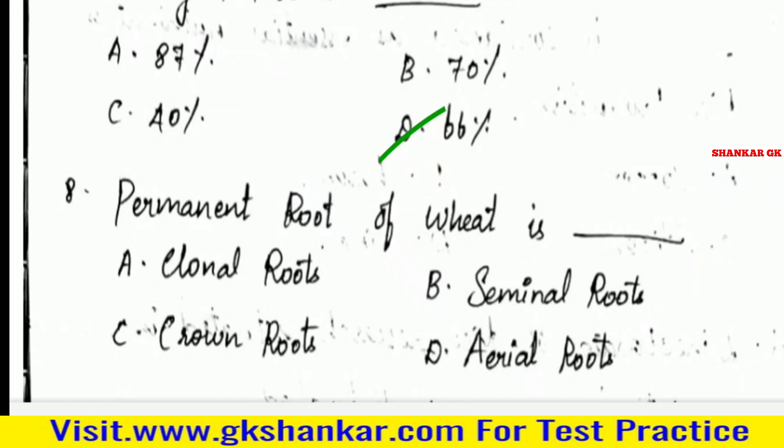Eighth question: Permanent root of wheat is — A. Clonal roots, B. Seminal roots, C. Cronal roots, D. Arial roots. Answer: C. Cronal roots.